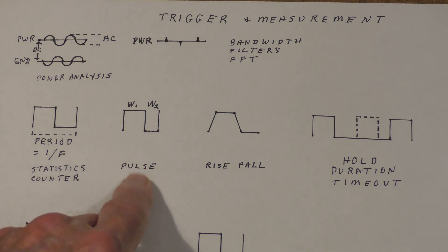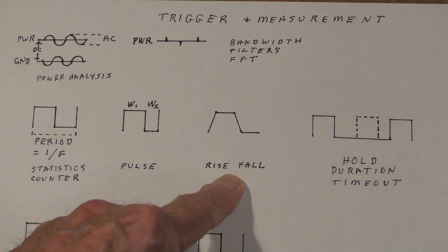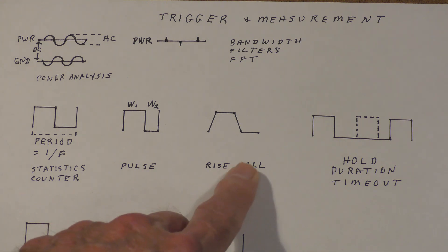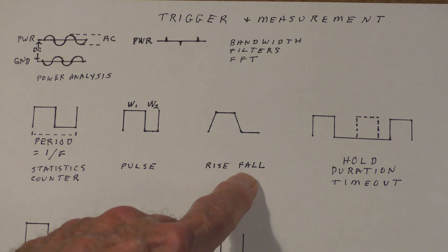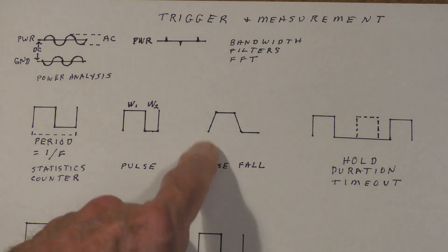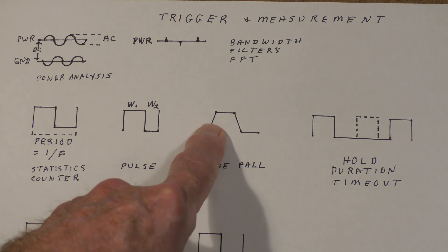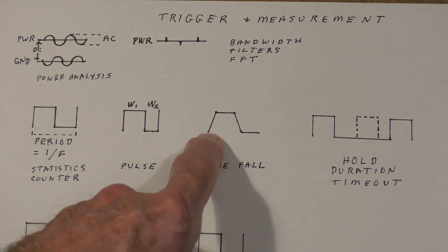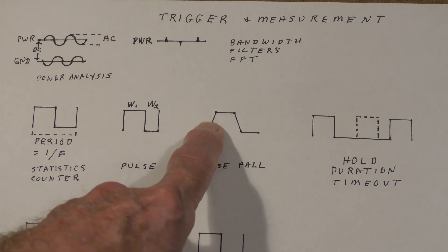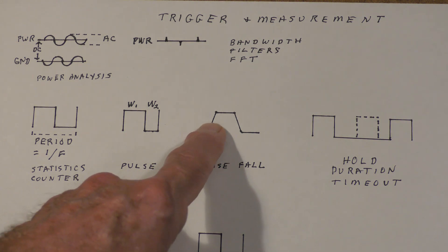Another measurement to pay attention to is the rise and fall times of your signals. These can be important because, in some cases, a fast rise time can cause noise, and in another case a slow rise time can cause oscillation — because while the signal is rising, at some point it passes through a transition region between 0 and 1, and some circuits will oscillate as they're passing through that region. Just be aware of that possibility.